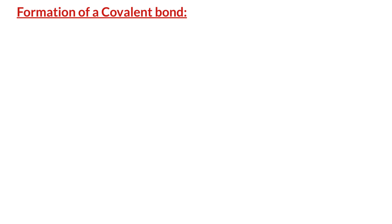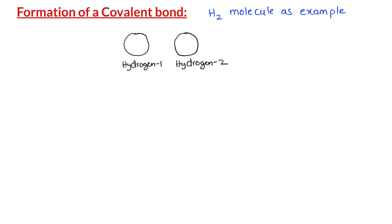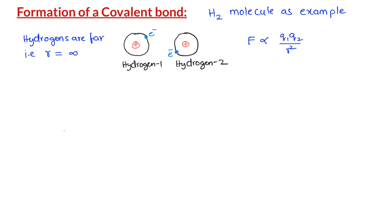Let us now discuss how a covalent bond forms between two hydrogen atoms. Let's say we have two hydrogen atoms approaching each other. Each hydrogen atom is made up of a positively charged proton and a negatively charged electron. According to Coulomb's law, the electrostatic force of attraction between two charged particles is directly proportional to the product of the charges and inversely proportional to the square of the distance between them. When the two hydrogen atoms are far apart from each other, the charges in one hydrogen atom do not attract or repel the charges in the other atom.